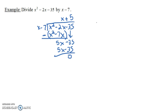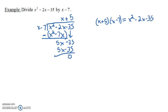What does it mean to say that our answer is x plus 5? One way we could check our answer is if we do x plus 5 times x minus 7, we should end up getting x squared minus 2x minus 35. If you FOIL this out, you'll see that you actually do get this. I kind of rigged this problem up initially to be nice, because x minus 7 is actually a factor of this.